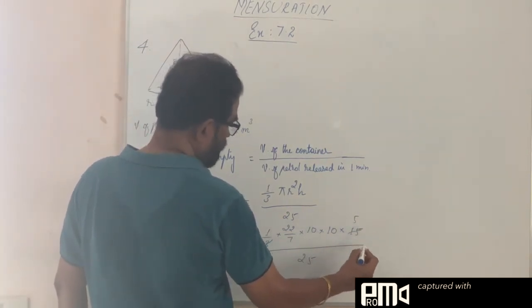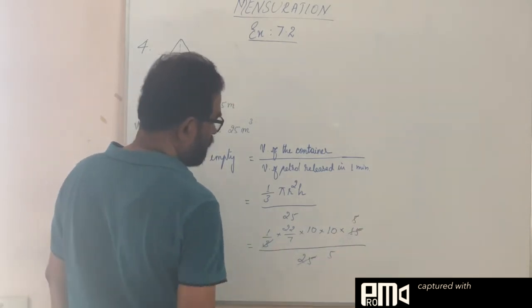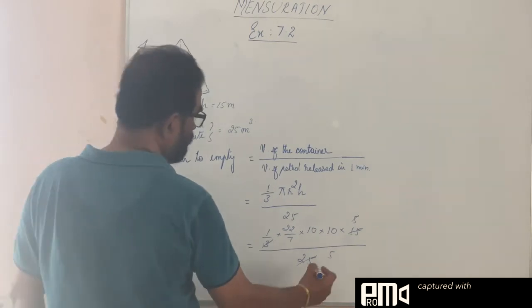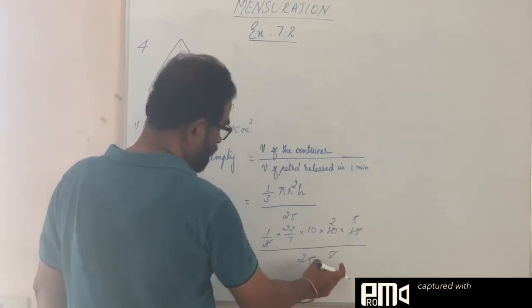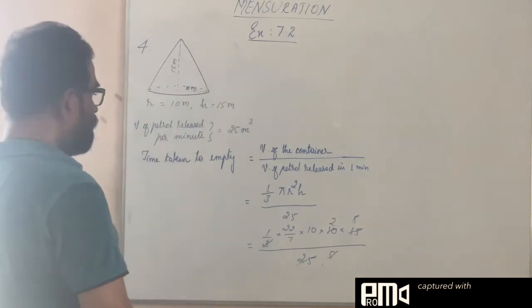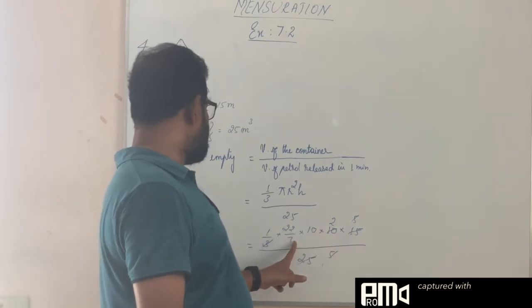Then this 5 and 10 we can cancel 2, so in the denominator we have cancelled everything. So what is remaining: 22 into 10 into 2 divided by 7. 22 into 2 is 44, so 440 divided by 7.